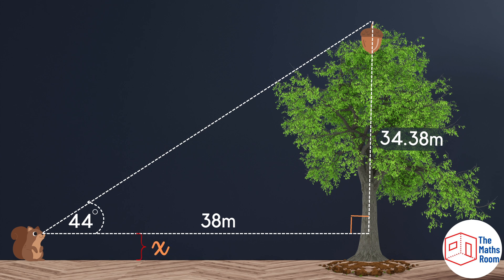If we did it say from Scabbers' eye height it would shift the whole question up by a certain amount. So the final height of the tree you would just need to remember to add to whatever that height is. And that's a way that they can make the question a little bit more tricky.